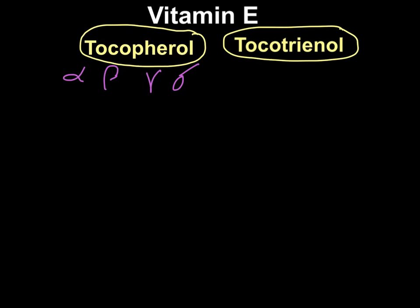Out of all these, the most abundantly available tocopherol in the North American diet is gamma tocopherol. However, in terms of biological activity, alpha tocopherol is the most biologically active form. That is why whenever we talk about vitamin E, we refer to alpha tocopherol.